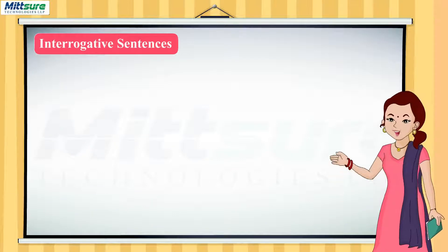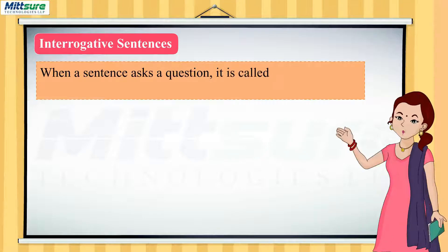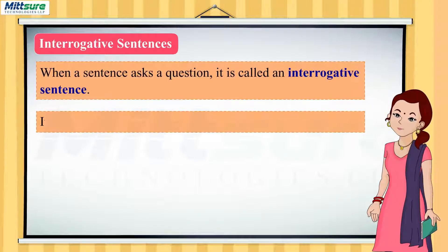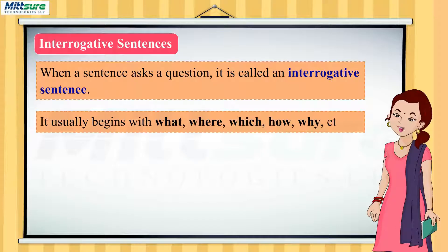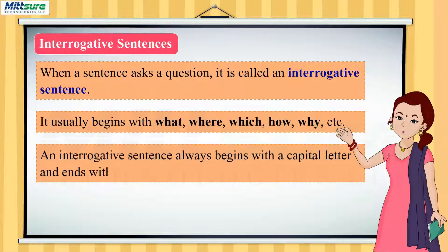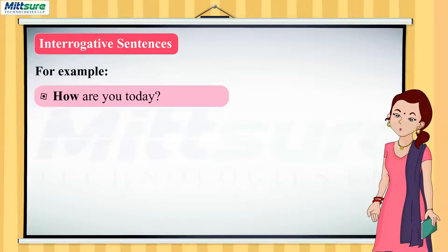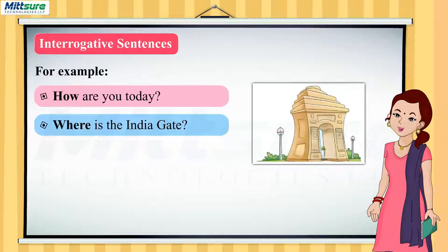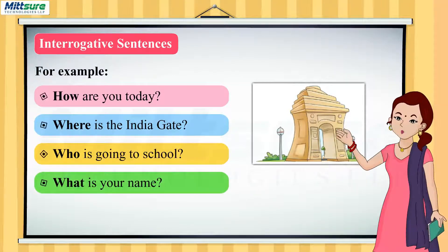Interrogative sentence: when a sentence asks a question, it is called an interrogative sentence. It usually begins with what, where, which, how, why, etc. An interrogative sentence always begins with a capital letter and ends with a question mark. For example: how are you today? Where is the India Gate?